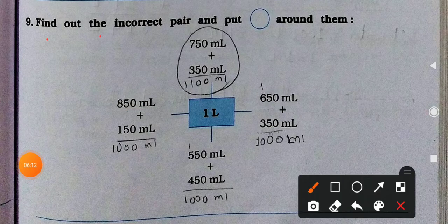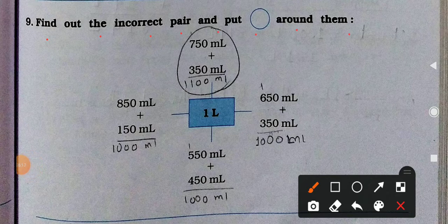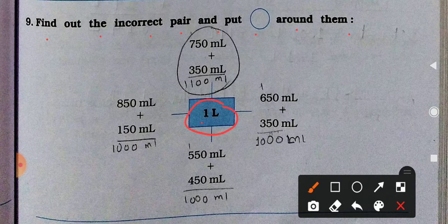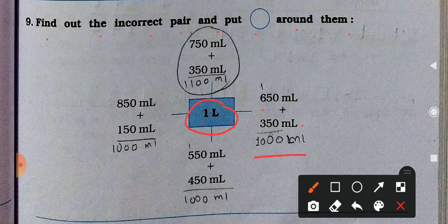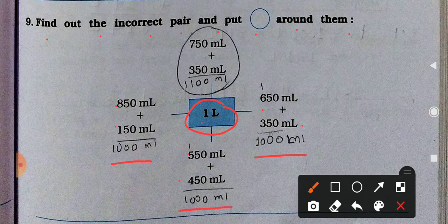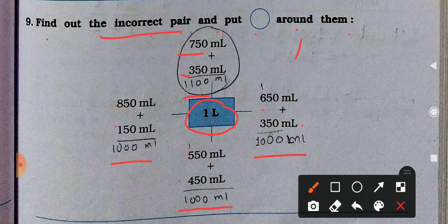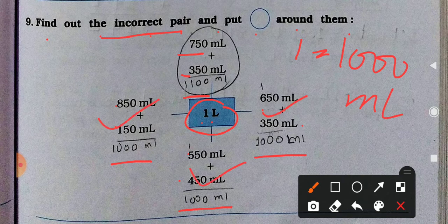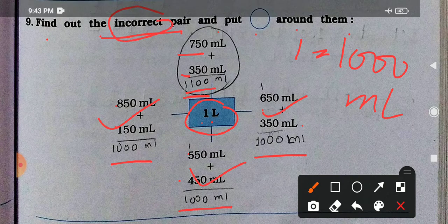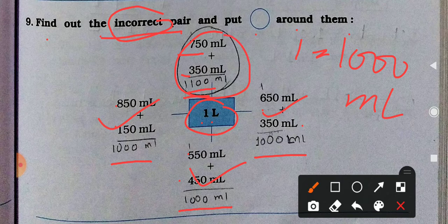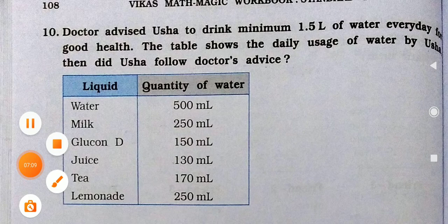Now see the 9th number. Find out the incorrect pair and put circle around them. 1 liter is in the middle here. 650 plus 350, 1000 milliliter. 850 plus 150, 1000 milliliter. 550 and 450, add it you will get 1000 milliliter. And see 750 plus 350, 1100 milliliter. This is incorrect pair. 1 liter means 1,000 milliliter. This is 1000, this is 1000, this is 1000. This is 1100. So this is incorrect pair. You have to do the circle on the given 750 milliliter plus 350, 1100 milliliter. Circle it.